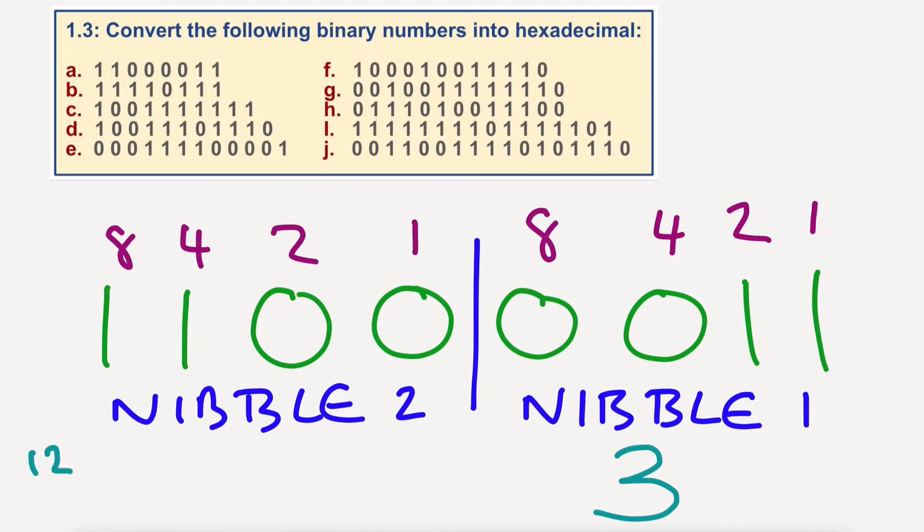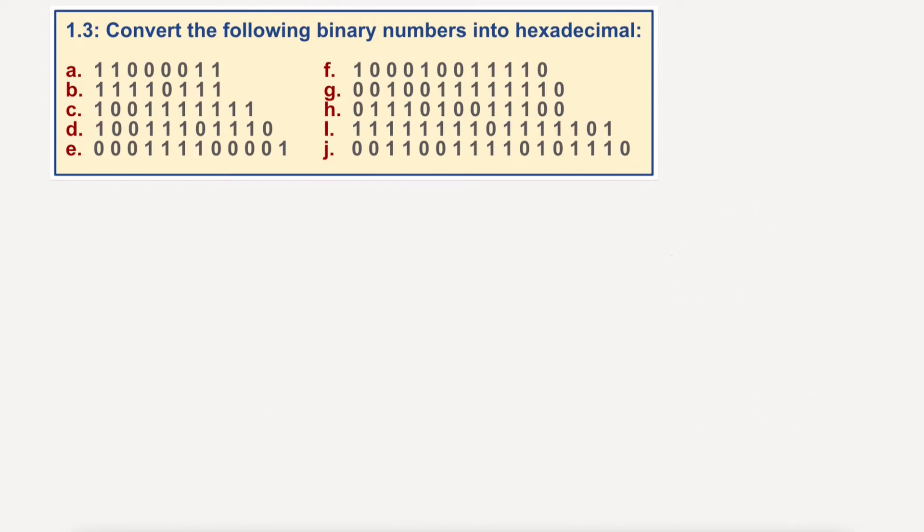But 12 in hexadecimal, as we know, A equals 10, B equals 11, C would equal 12. Okay, going all the way up to F equaling 15. So the answer for this one would be C3. Okay, I'll go on and do the last one, J. So we'll just rub all this out.